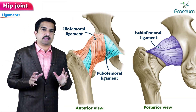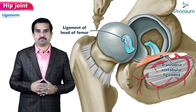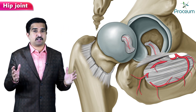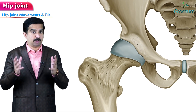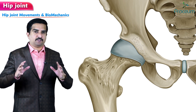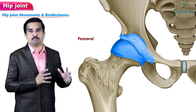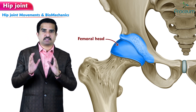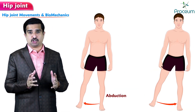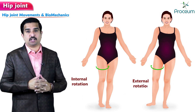After discussing the ligaments, it is important to know about hip joint movements and biomechanics. A key point is that no muscles attach directly to the femoral head, but many muscles cross the hip joint and allow flexion, extension, abduction, adduction, internal rotation, and external rotation of the thigh.